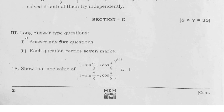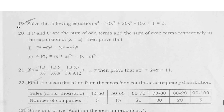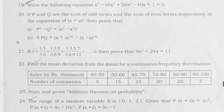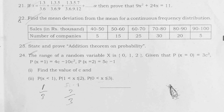We have seven long answer questions out of which you have to answer any five. First LAQ is from De Moivre's Theorem. Second LAQ is from chapter 4, Theory of Equations. Third and fourth LAQs are from chapter 6, Binomial Theorem. Fifth LAQ is from Measures of Dispersion. Sixth LAQ is from chapter 9, Probability. And seventh LAQ is from Random Variables.